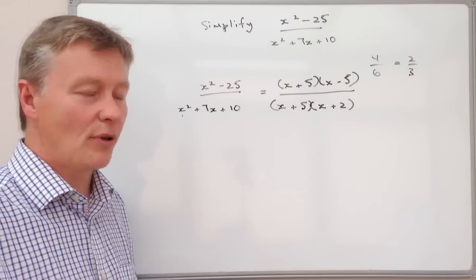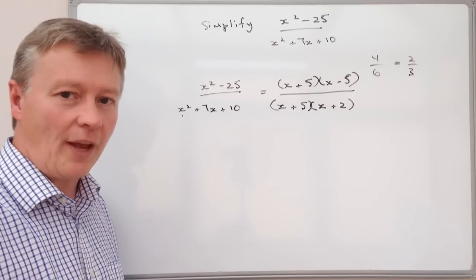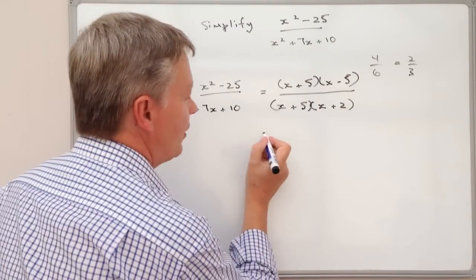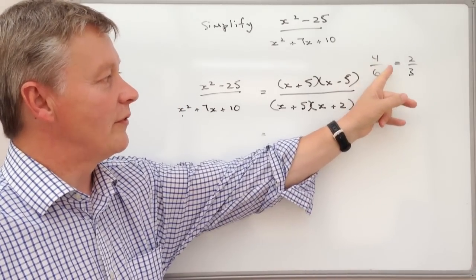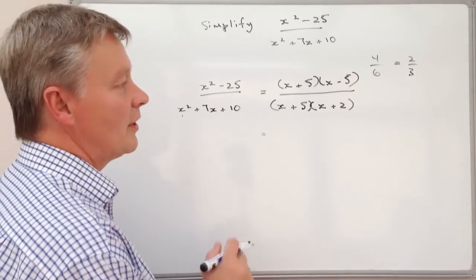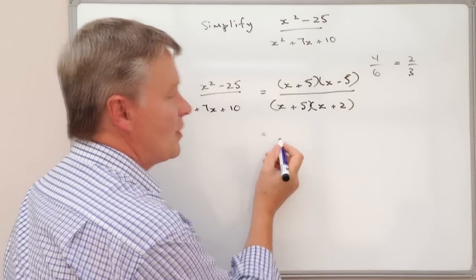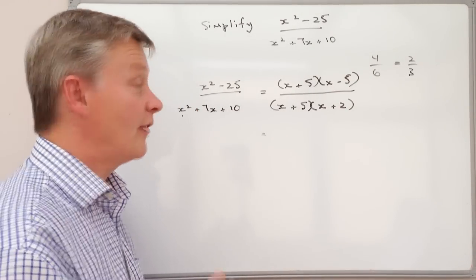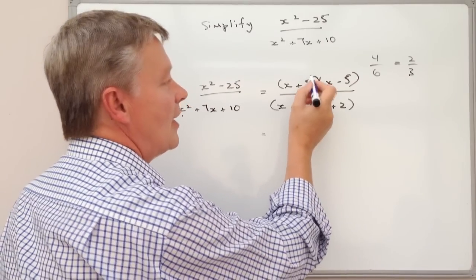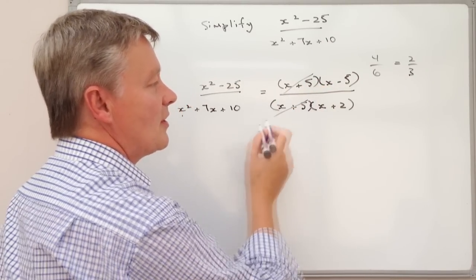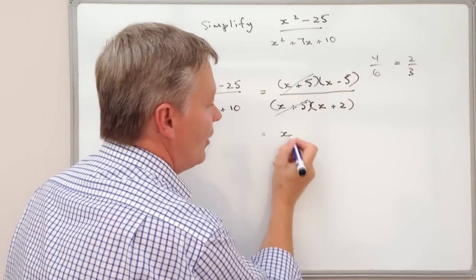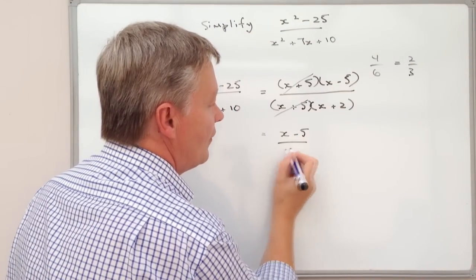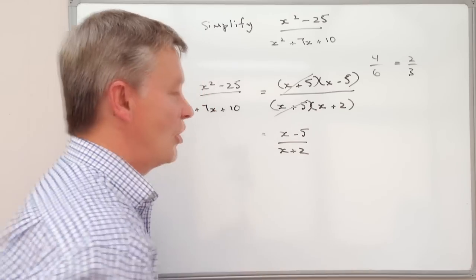I will put a link in the description box to the other videos that deal with that particular function. But what you can see in exactly the same way as we've done there where we divide it through by 2, what I'm going to do is divide top and bottom by x plus 5. Well if I divide top and bottom by x plus 5 that will cancel and that will cancel. So simplification of that will be x minus 5 divided by x plus 2.